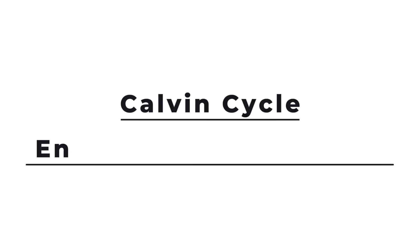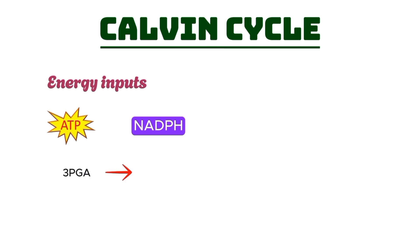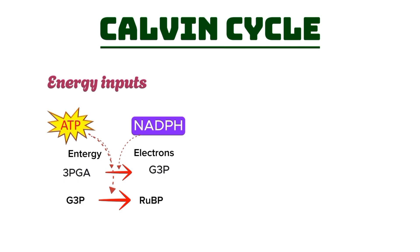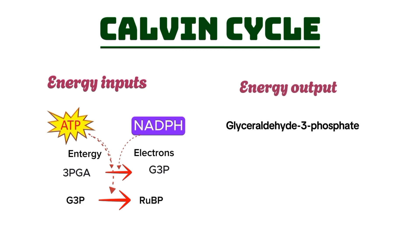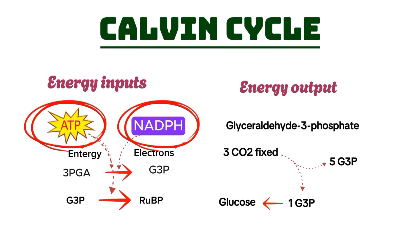In the Calvin Cycle, energy inputs and outputs are vital for its function. The primary inputs are ATP and NADPH, produced during the light-dependent reactions. ATP provides energy for converting 3-phosphoglycerate into glyceraldehyde-3-phosphate, while NADPH donates high-energy electrons for this reduction. ATP is also used in the regeneration phase to convert G3P back into RuBP. The main output is glyceraldehyde-3-phosphate (G3P): for every three CO₂ molecules fixed, one G3P is produced, which can be used to synthesize glucose. The remaining G3P molecules are recycled to regenerate RuBP, allowing the cycle to continue.